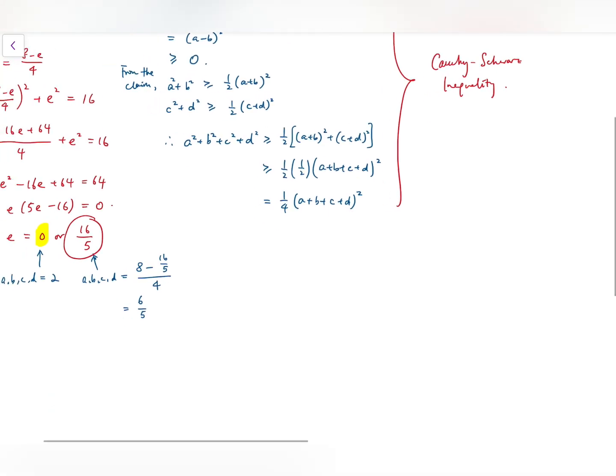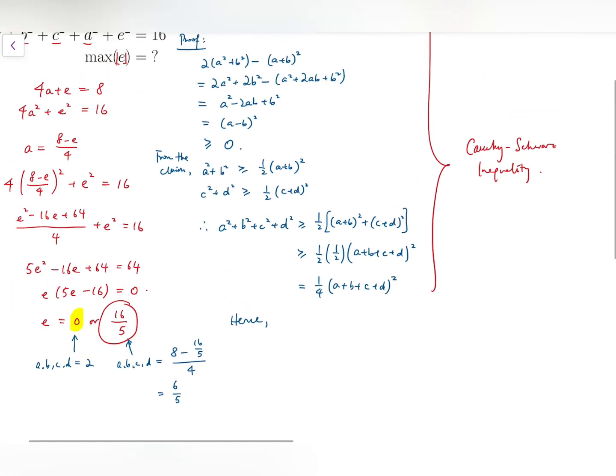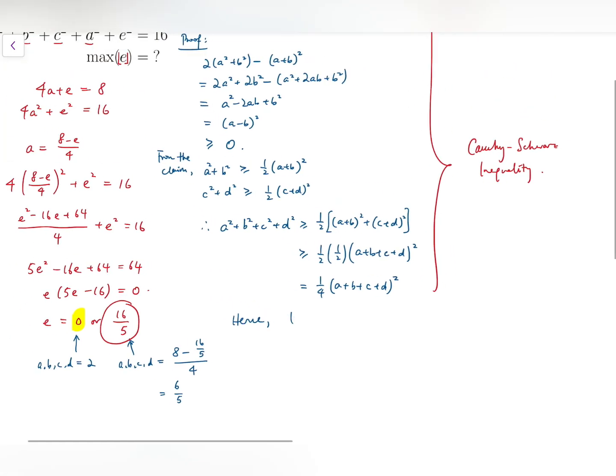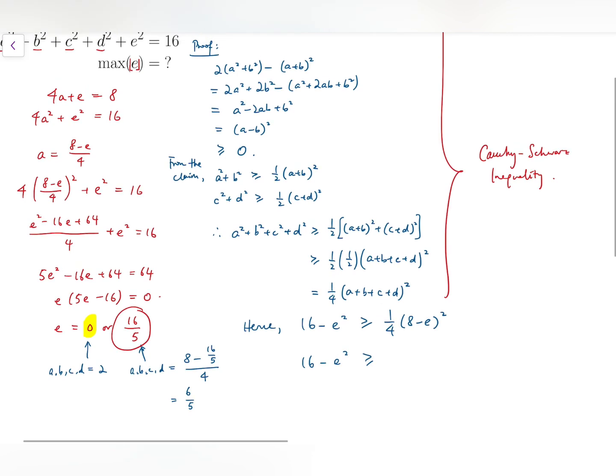Now from this inequality, I can proceed with, hence, A squared plus B squared plus C squared plus D squared is actually 16 minus E squared. And that will be greater or equal to a quarter of 8 minus E all squared. And you can simplify from this. It's just an inequality about E.